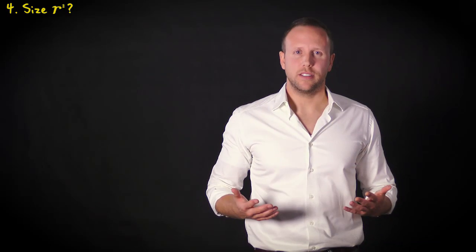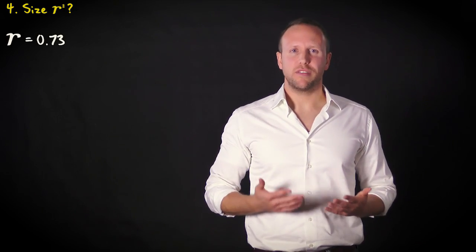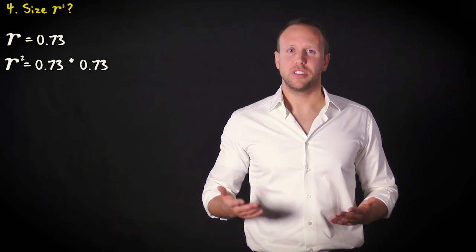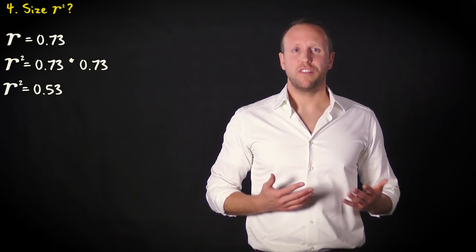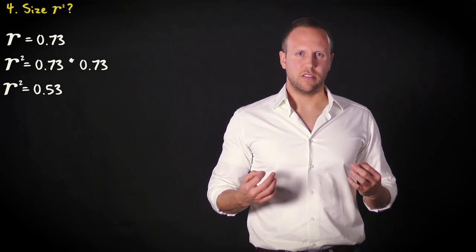The fourth question we want to answer is what the value of r squared is. That's easy. It's Pearson's r squared. So 0.73 multiplied with 0.73 equals 0.53.